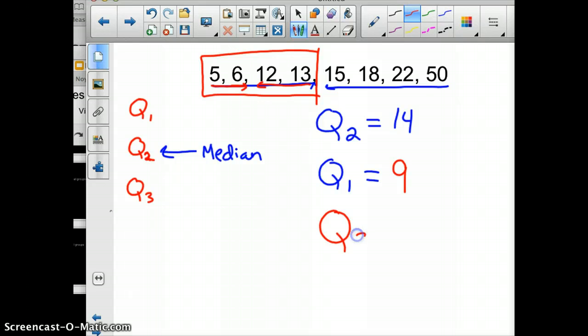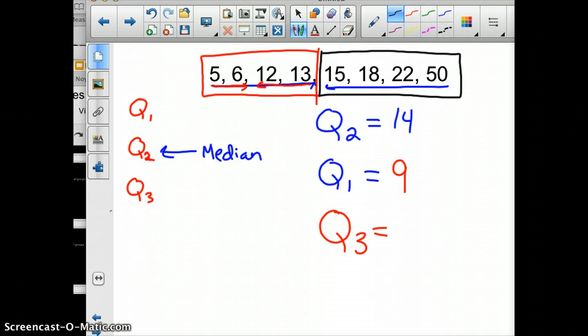Then quartile 3 - you look at the back half of your data. For quartile 3, we want to know the middle of that data. So you count up two, back two, so right in between 18 and 22, and so that would be 20. That's how you split the data into quarters.